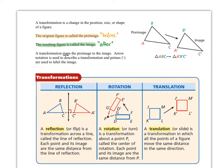A transformation maps the pre-image to the image. We use arrow notation to describe the transformation. And as far as the image, we use little tick marks to designate that that's the after or the image.